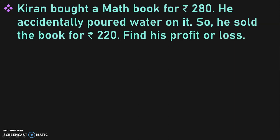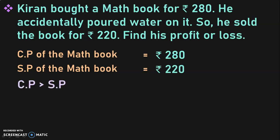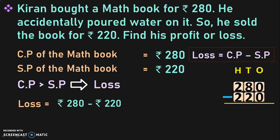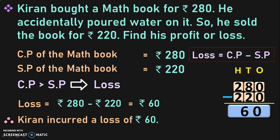Kiran bought a math book for rupees 280. He accidentally poured water on it, so he sold the book for rupees 220. Find his profit or loss. Cost price of the math book is rupees 280. Selling price of the math book is rupees 220. In this case, cost price is greater than the selling price — the transaction results in a loss. Loss equals cost price minus selling price: 280 minus 220. The difference is rupees 60. Therefore, Kiran incurred a loss of rupees 60.